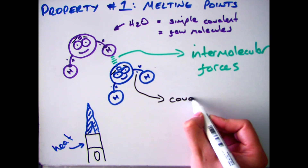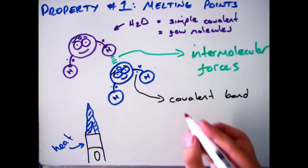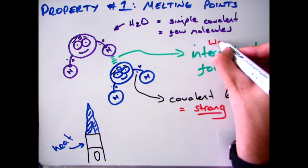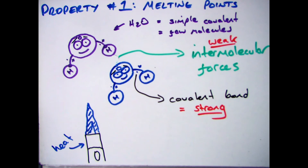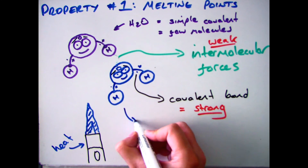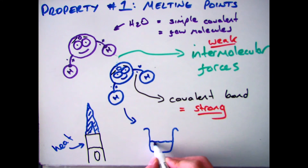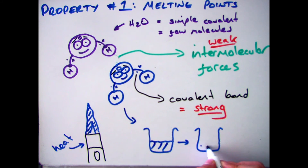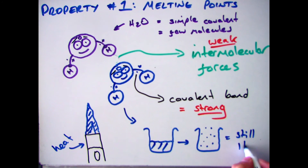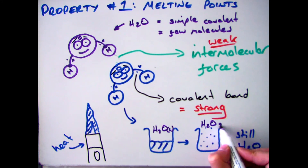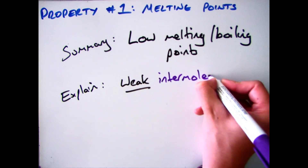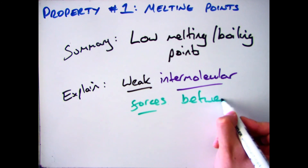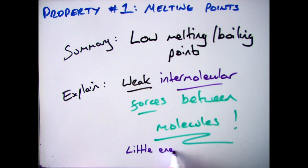Covalent bonds themselves are actually very, very strong, so it takes a lot of energy to break them. However, intermolecular forces are weak, which means they don't take a lot of energy to break. When you heat up and break these intermolecular forces, instead of having a chemical reaction, you're just changing state — for example, taking water H2O liquid and turning it into steam H2O gas. In summary, all simple covalent compounds have low melting points and boiling points because they have weak intermolecular forces, which don't take a lot of energy to break.